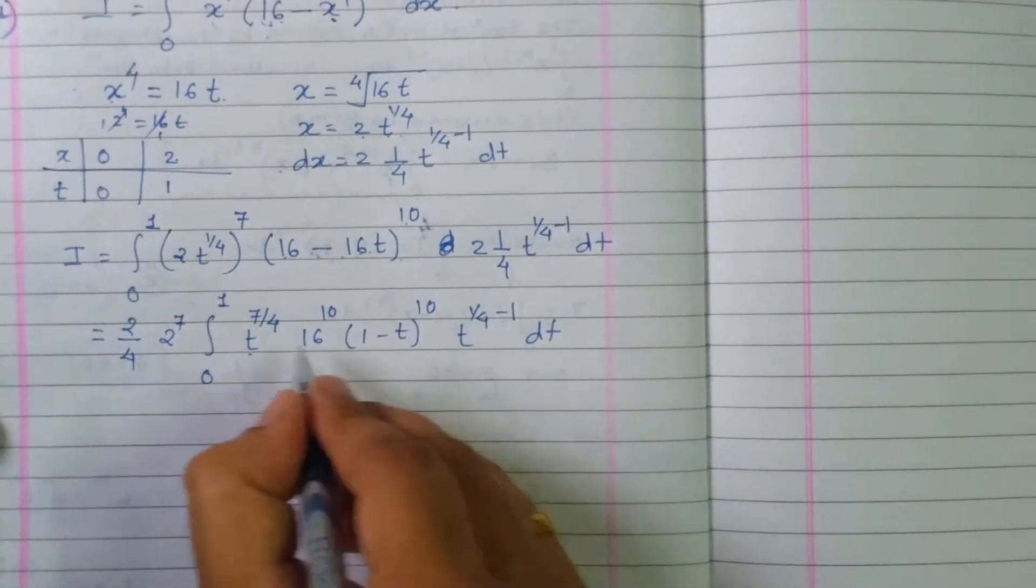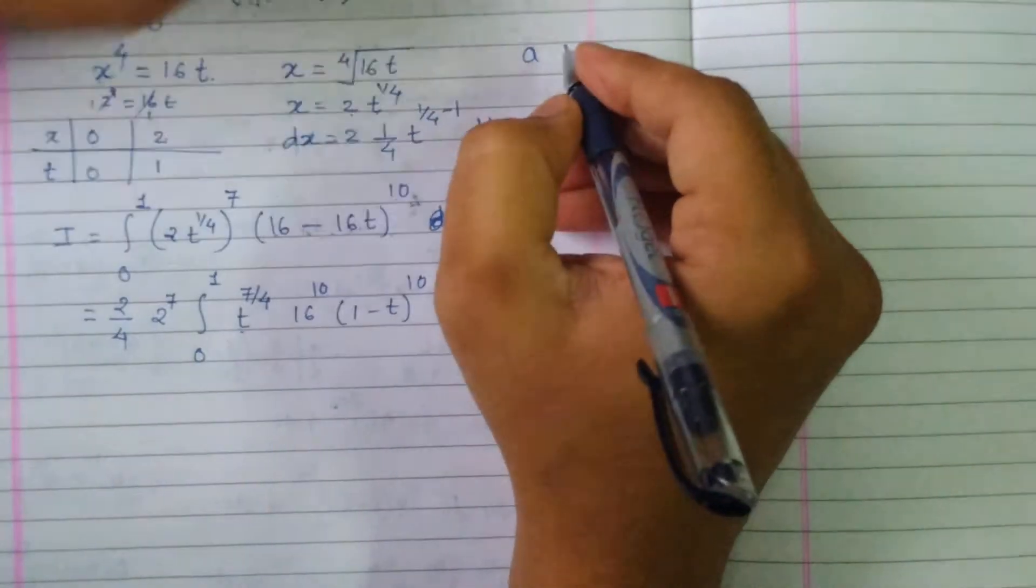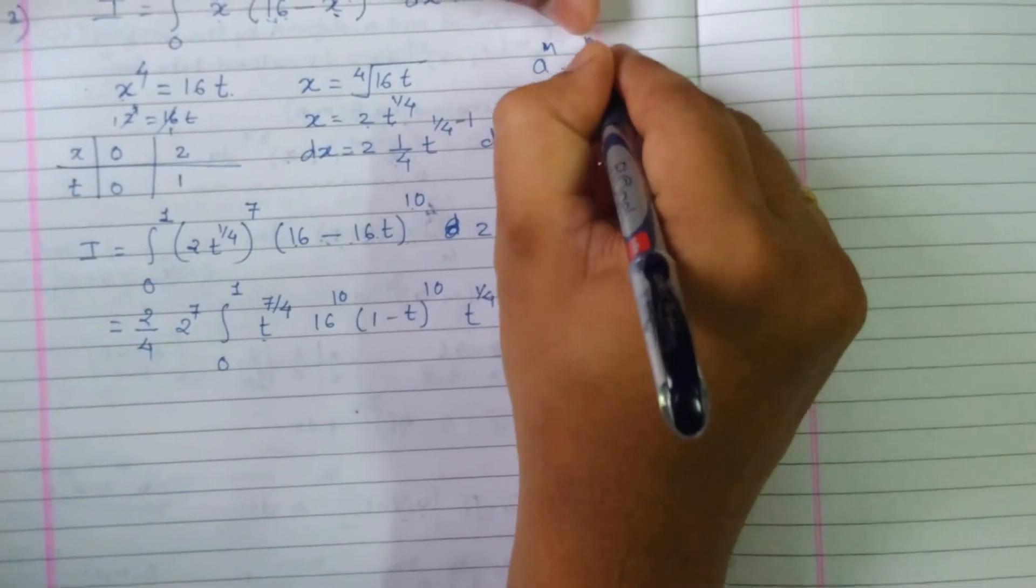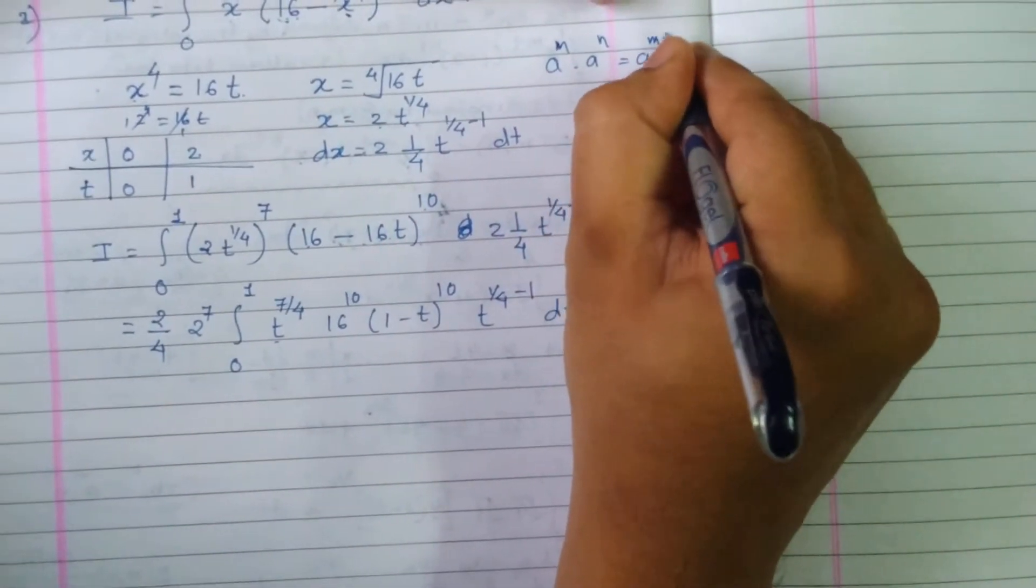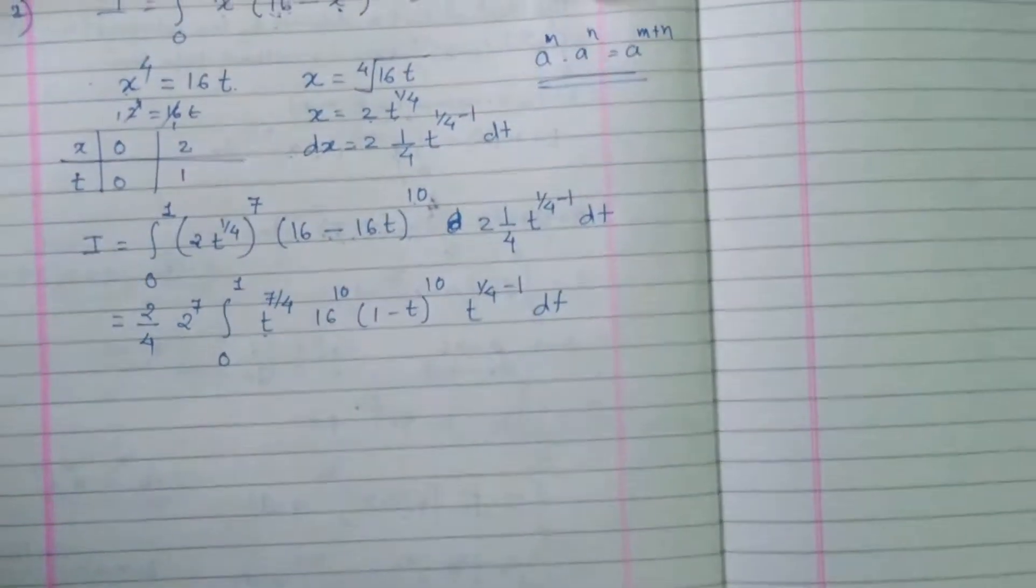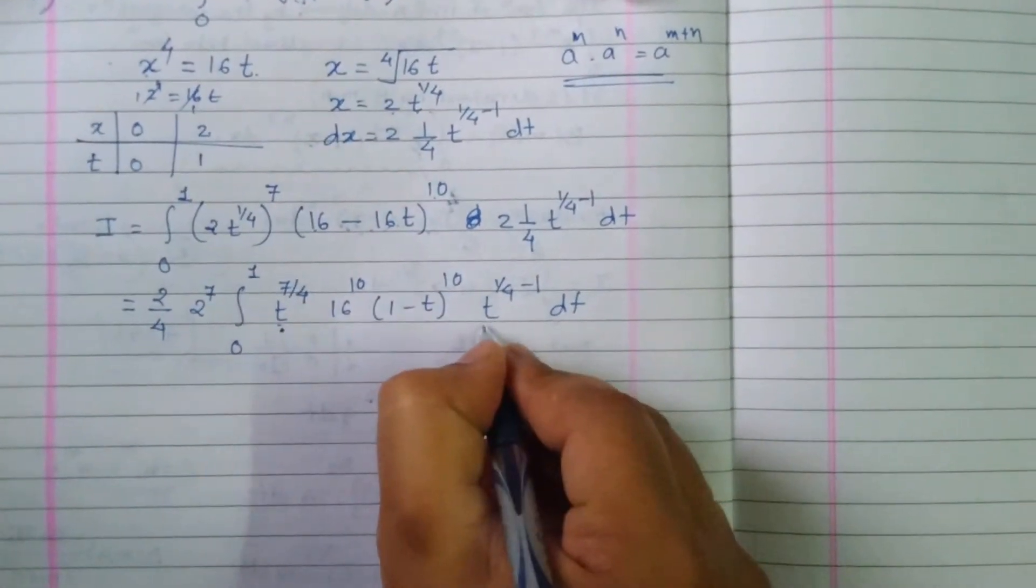Now you can see the base is the same. That means by laws of indices, a raised to m times a raised to n equals a raised to m plus n. So with the help of this property we will join these two terms.